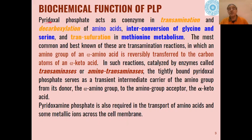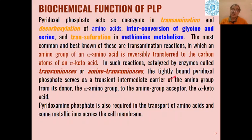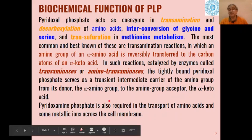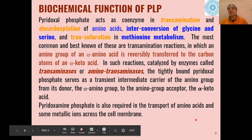All these reactions where pyridoxal phosphate acts as co-enzyme are catalyzed by enzymes known as transaminases or aminotransferases. On these enzymes, pyridoxal phosphate is tightly bound and serves as a transient intermediate carrier of the amino group from its donor, the alpha-amino acid. Pyridoxal phosphate is also required in the transport of amino acids and some metallic ions across the membrane. These are all the biochemical functions of PLP.